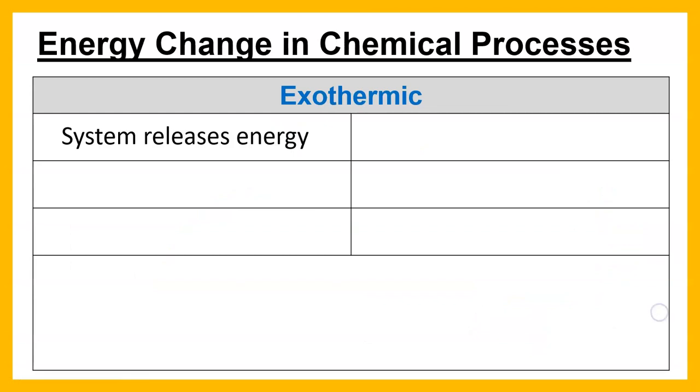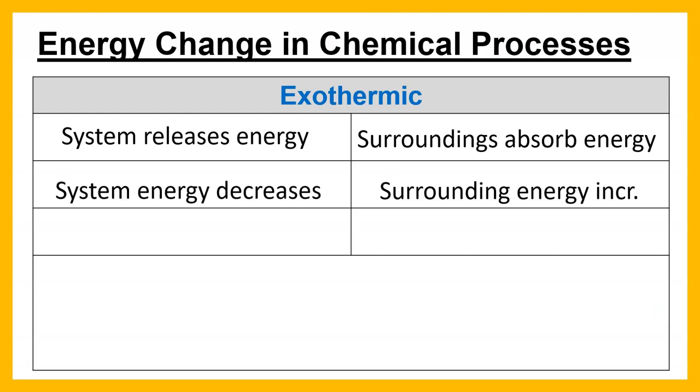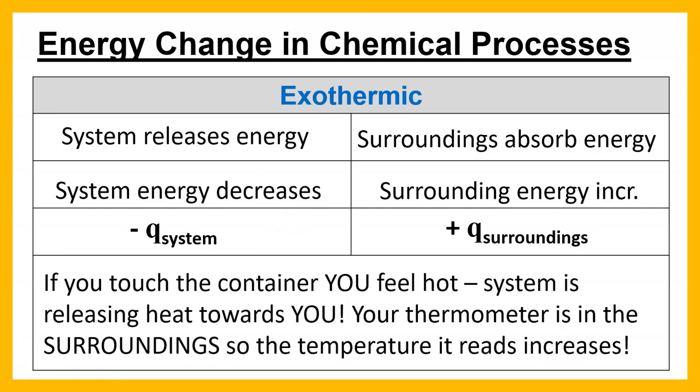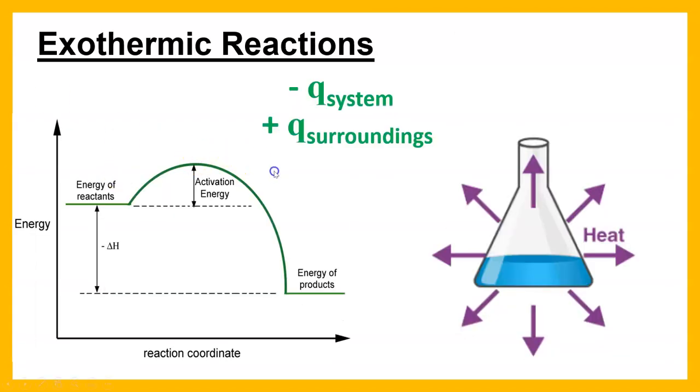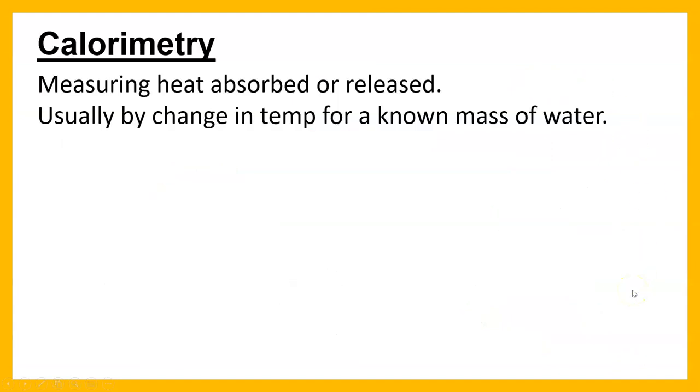The opposite would be exothermic. The system releases energy. The surroundings gain it. The system energy decreases. Surroundings increase. System is negative this time. Surroundings are positive this time. So if I reach out and grab the beaker this time, I'm going to feel hot. My thermometer is going to go up. Sometimes it could be so extreme that you see flames. That's exothermic. On our reaction diagram, we're going to end lower than we started. Our arrows this time are showing you that heat is being released outward.